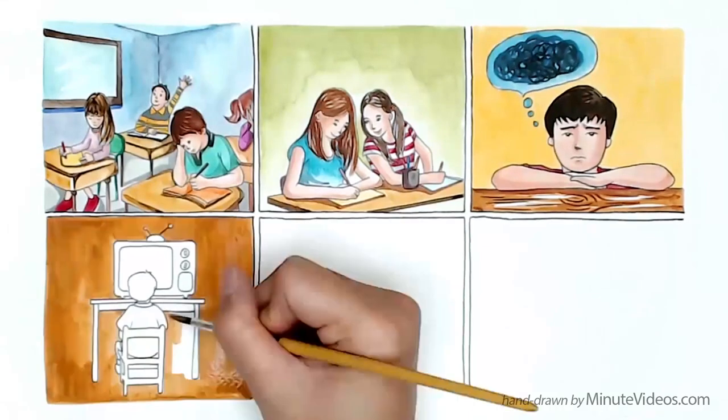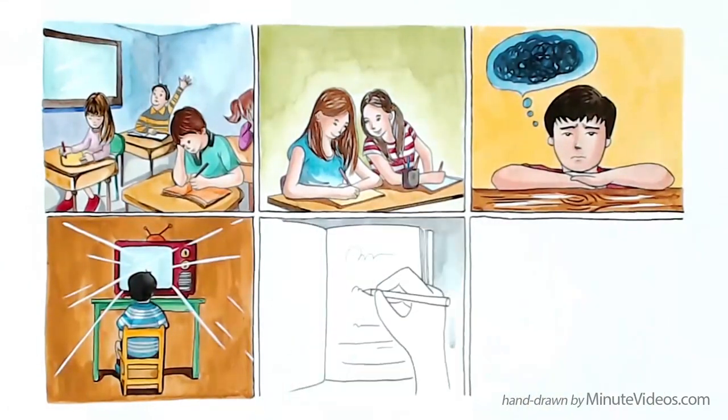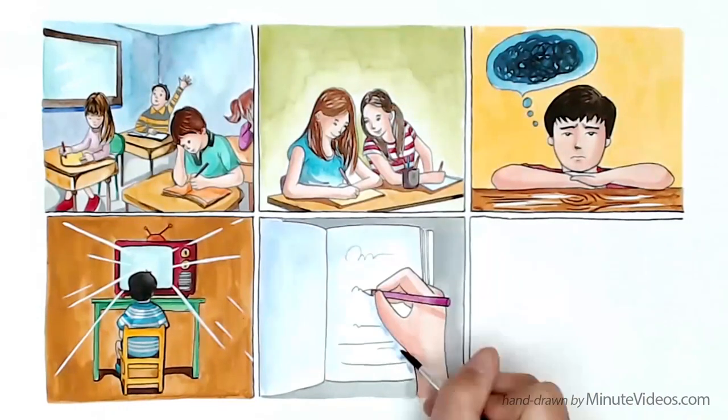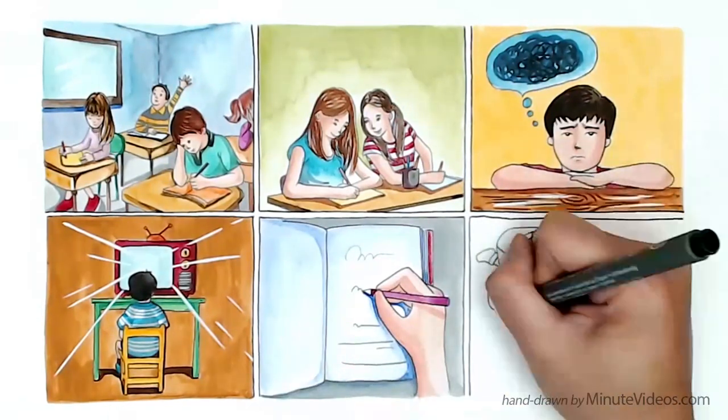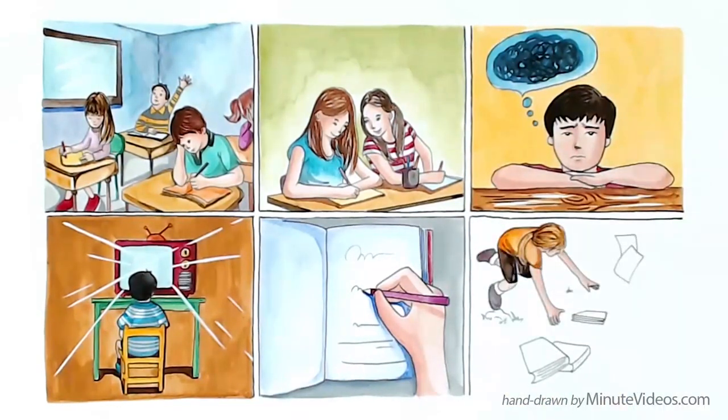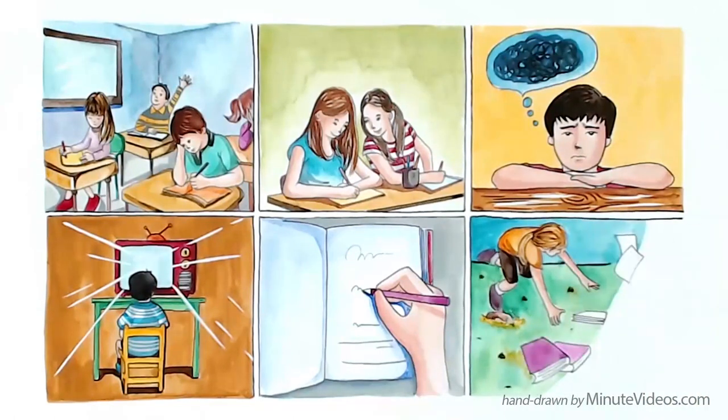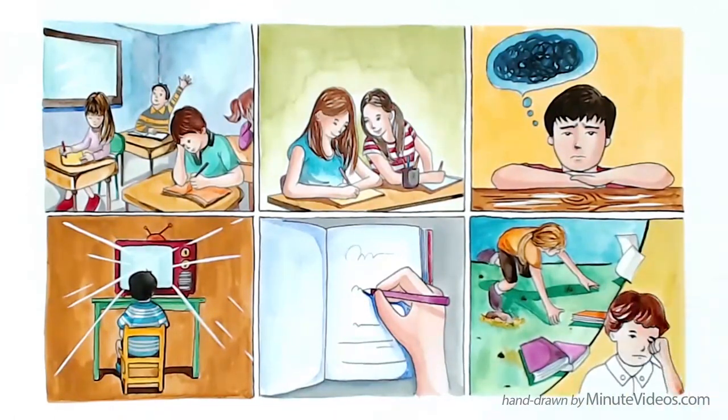They look at things really close up. They execute handiwork poorly and their handwriting is extraordinarily bad. Sometimes kids even walk clumsily or show more explicit symptoms like tearing or itching of the eyes.